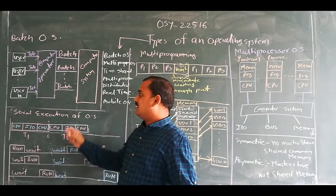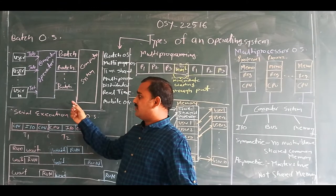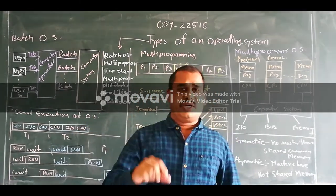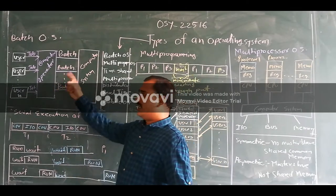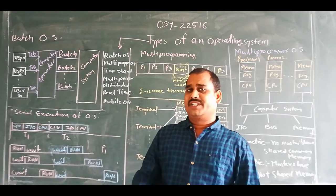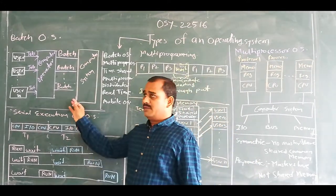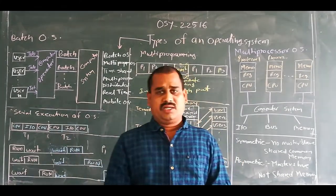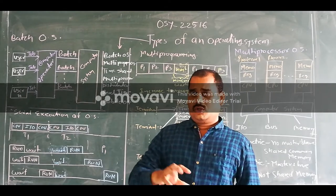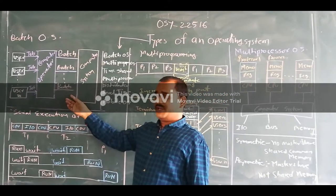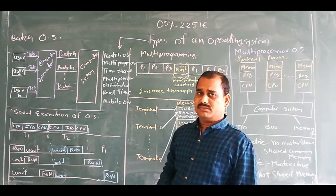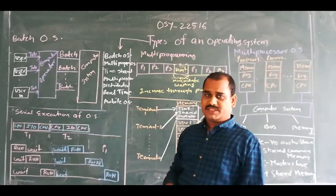Here, the batch operating system is a non-interactive system and also performs execution in a sequential manner. So the next process or the next job will remain in an unwanted wait status. It means here the execution time will be increased, as well as throughput will be decreased. So to overcome the increasing waiting time and decreasing throughput, we will see another type of operating system, that is the multi-programming operating system.